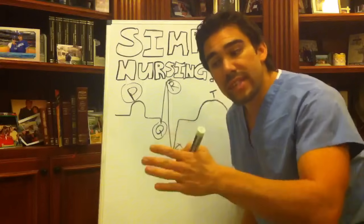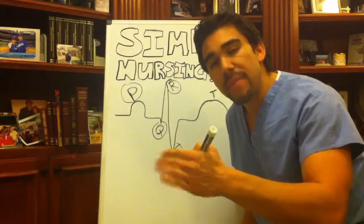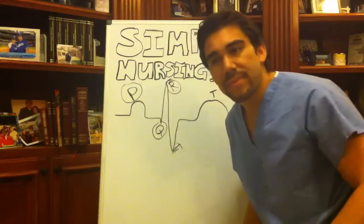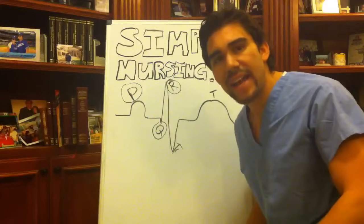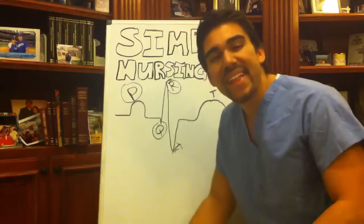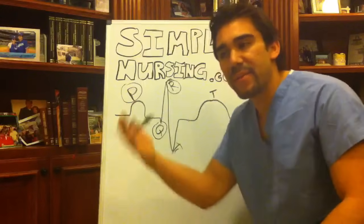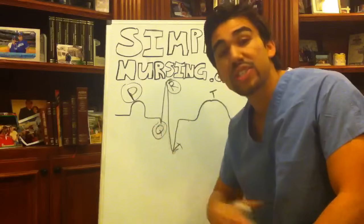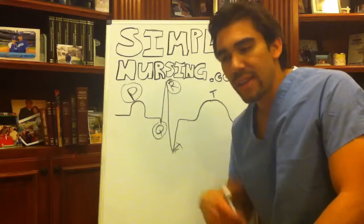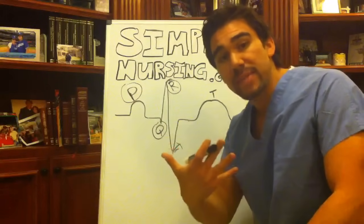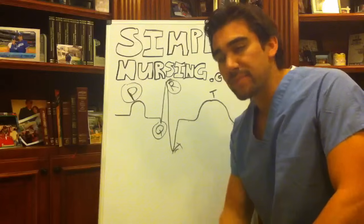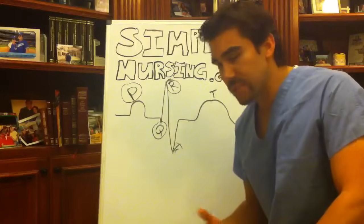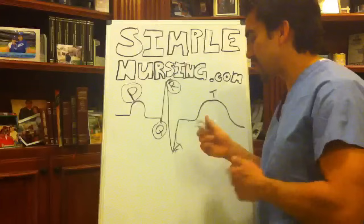And then use the method of exclusion — basically blocking out and excluding the wrong answers first. Use this five-step system that I'm talking to you guys about, and then use the method of exclusion. So let's go into this.